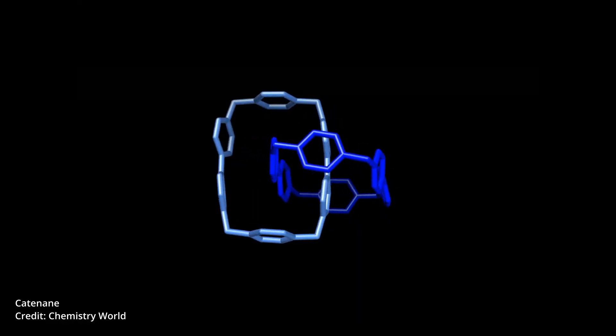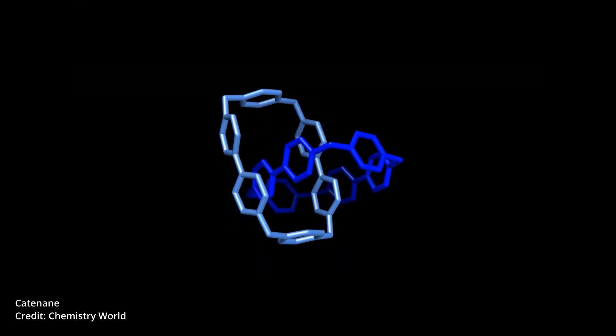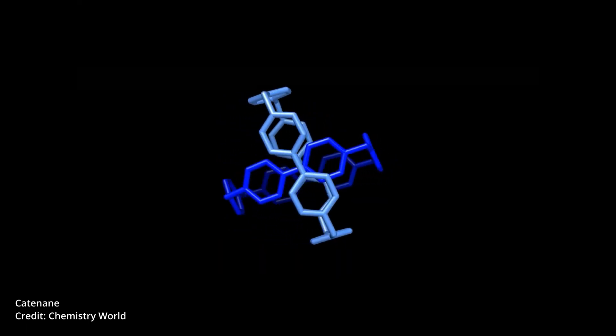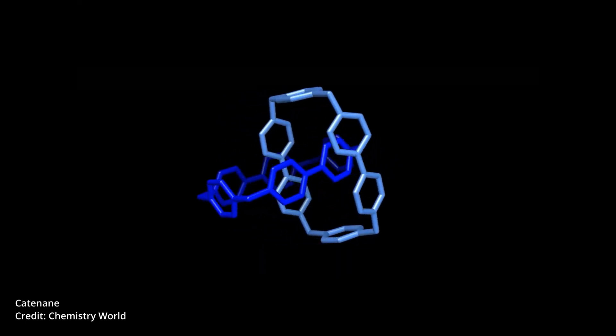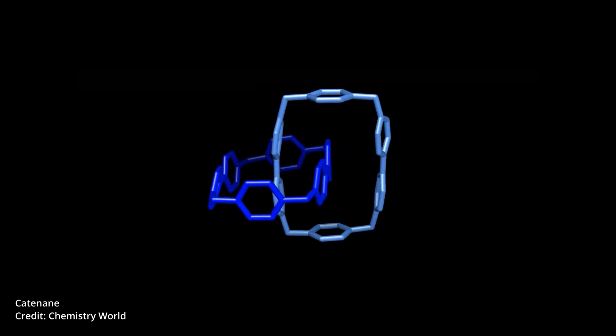In 1983, Sauvage succeeded in linking two ring-shaped molecules together to form a chain, called a catenane.